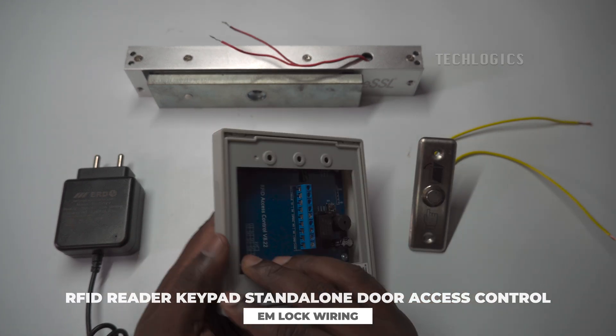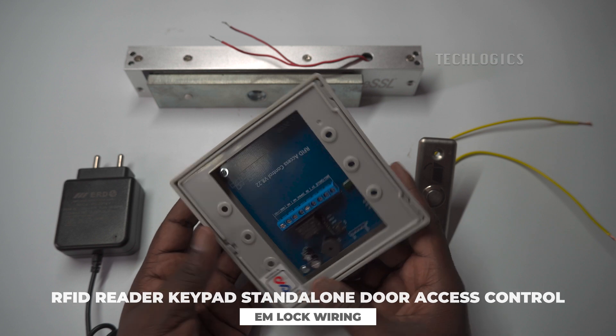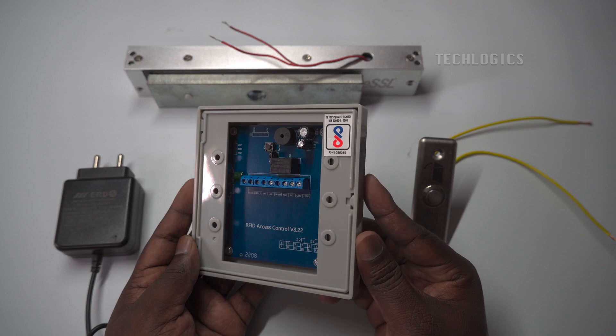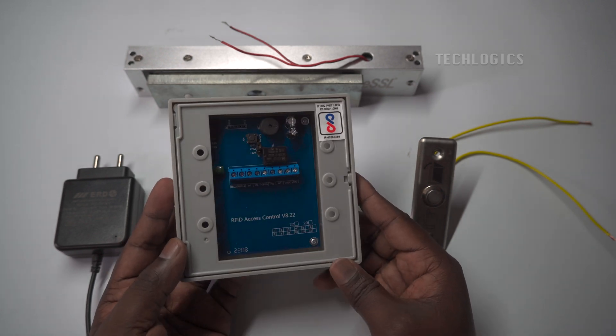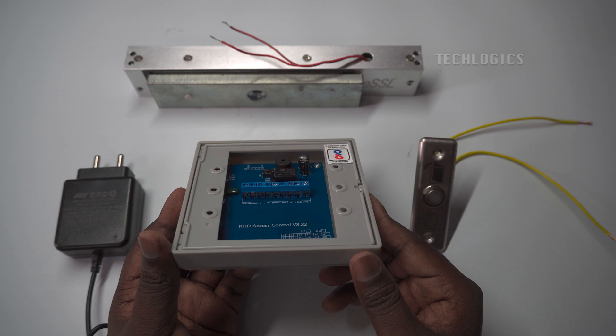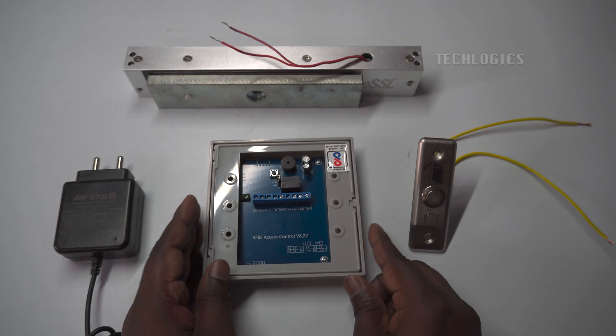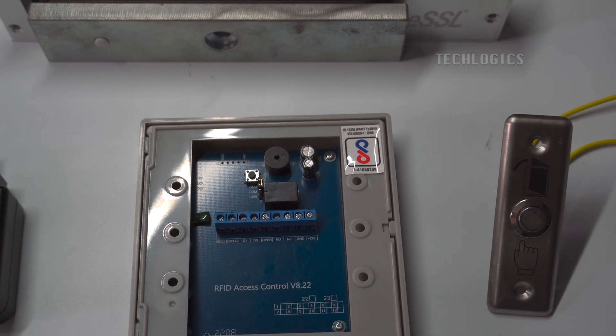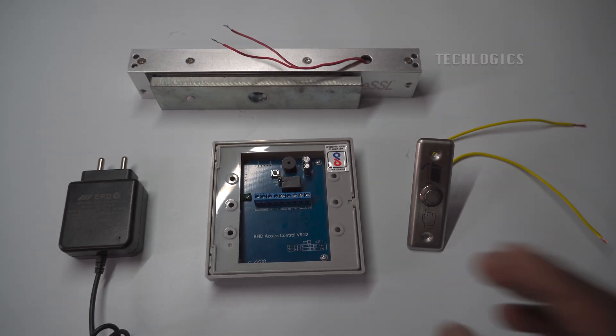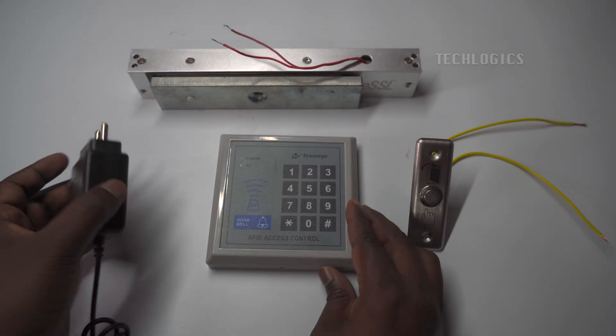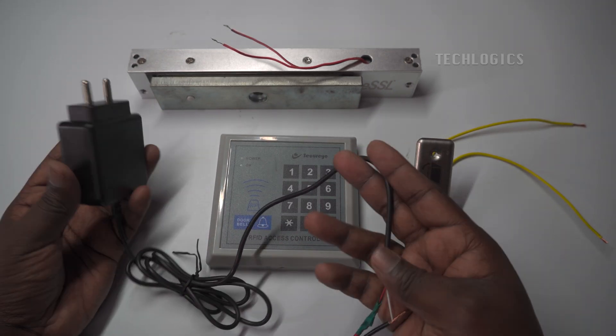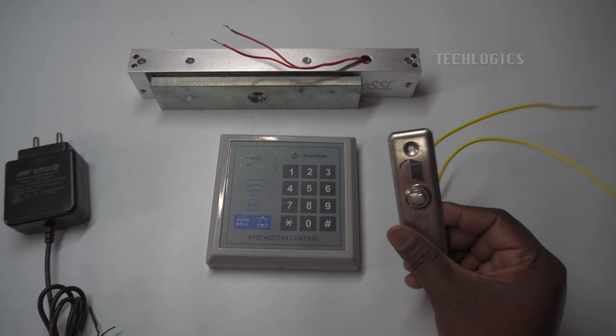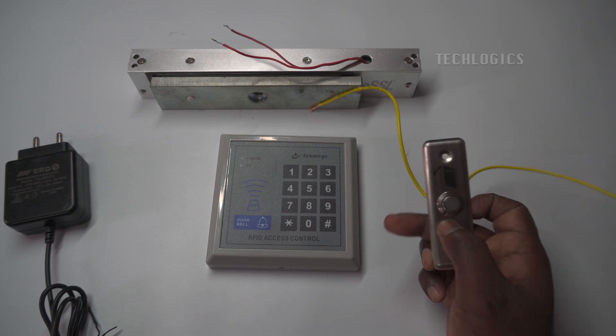In this video tutorial we demonstrate how to connect an electromagnetic lock with a standalone access controller and an exit switch. This step-by-step guide will help you understand the wiring connections and configuration required to set up a secure and efficient access control system. To set up the system, you'll need the following key components: an electromagnetic lock to secure the door, a standalone access controller to manage access credentials, an exit switch for easy egress, and a power supply to ensure the system operates smoothly and efficiently.